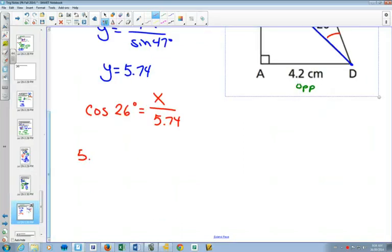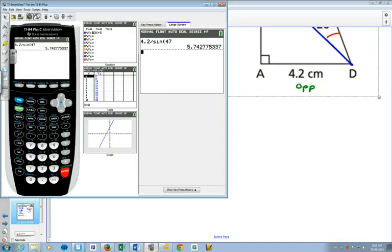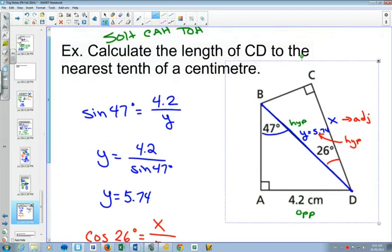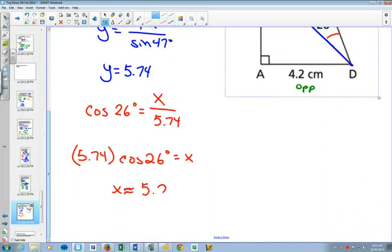And on our calculator, we still have all those decimal places. So we can just go times cosine of 26, 5.16. How much do they want us to round to? Nearest tenth. Circle our final answer. 5.2 centimeters.